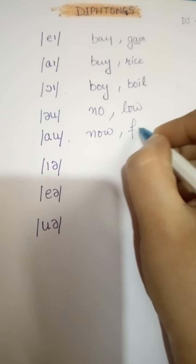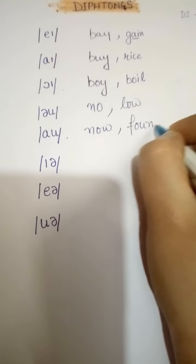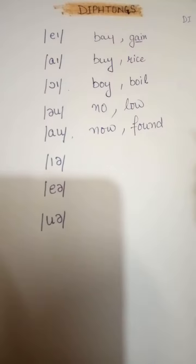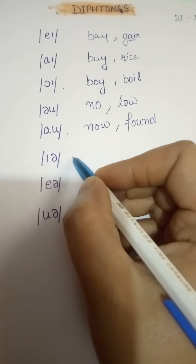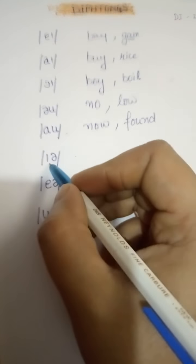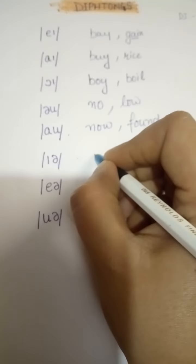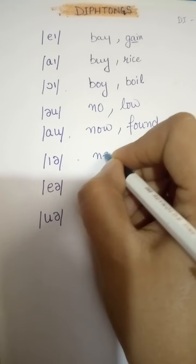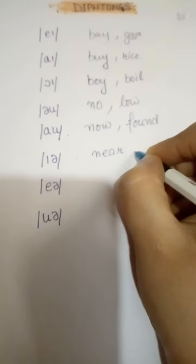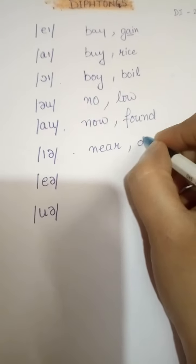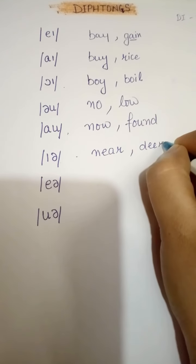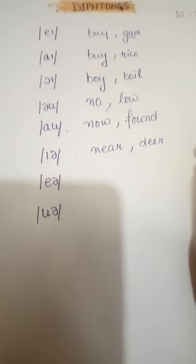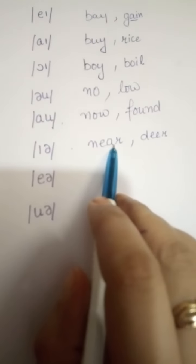The next diphthong is the 'ow' sound, also used in pronouncing words like 'found.' Then there is the 'ia' sound as in 'near' and 'dear.'